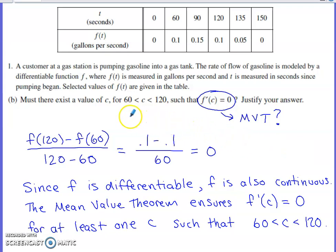Now, in part B, they say, must there be a value c from 60 to 120 such that f'(c) equals 0? Justify your answer.